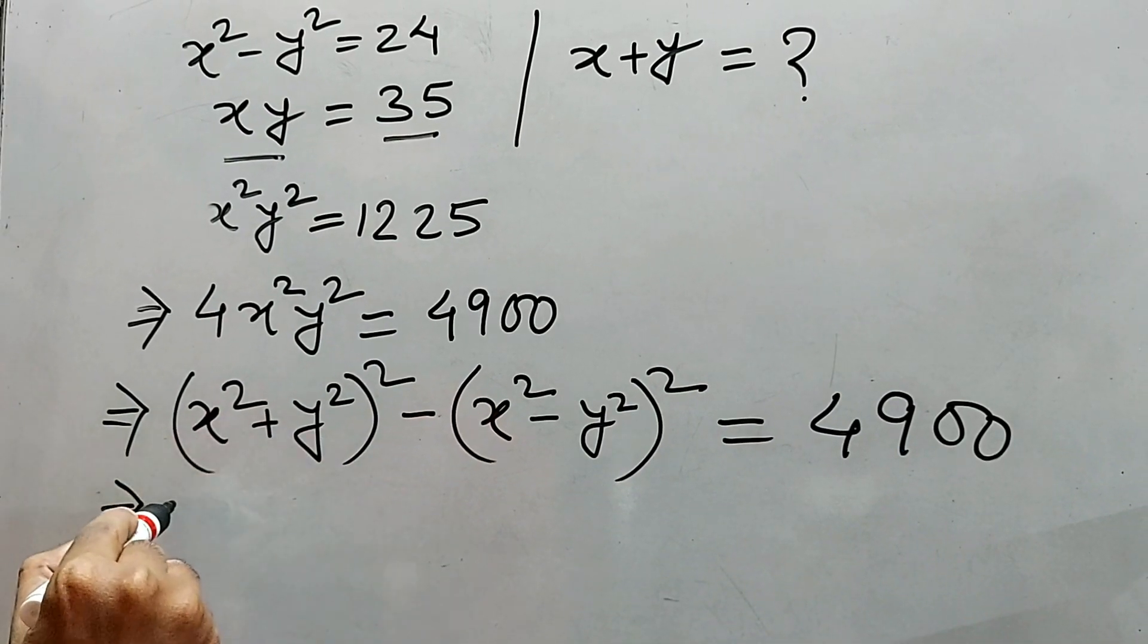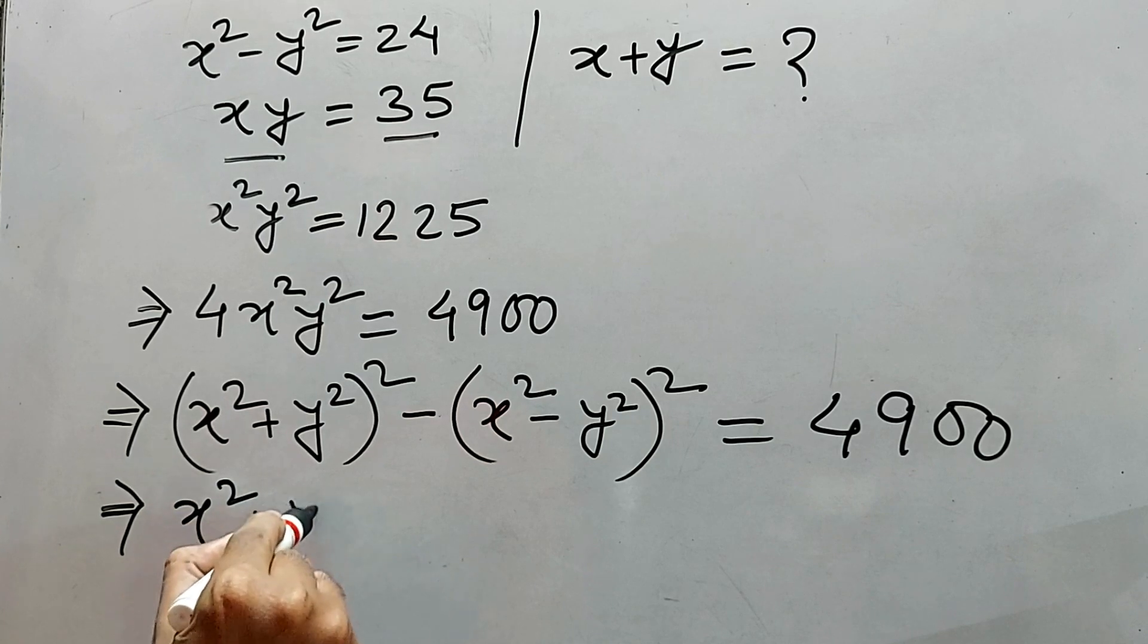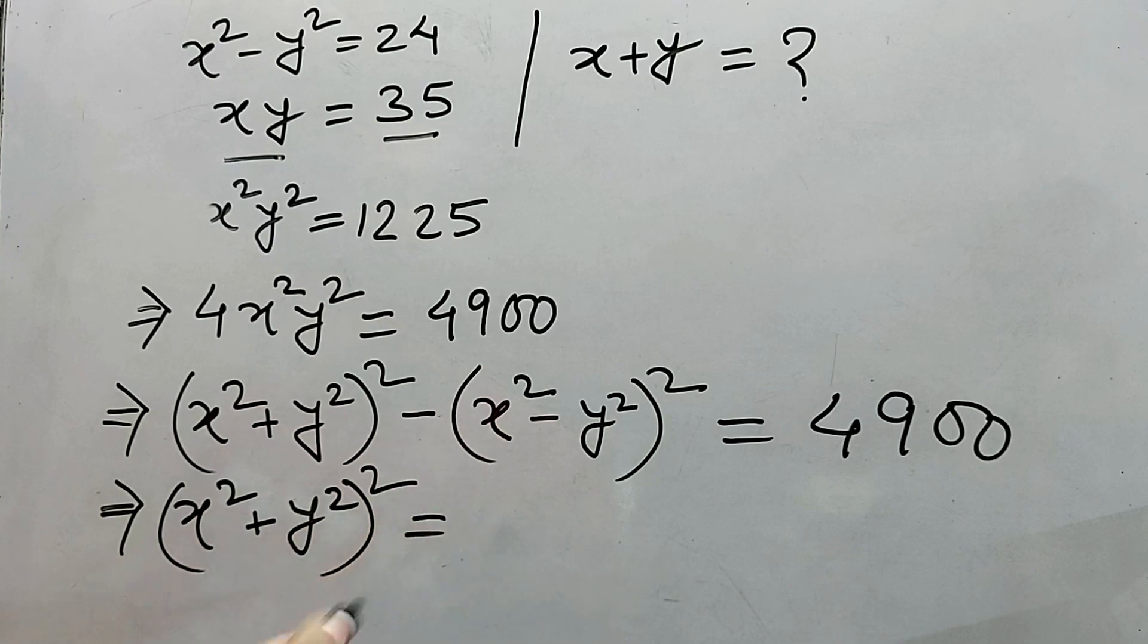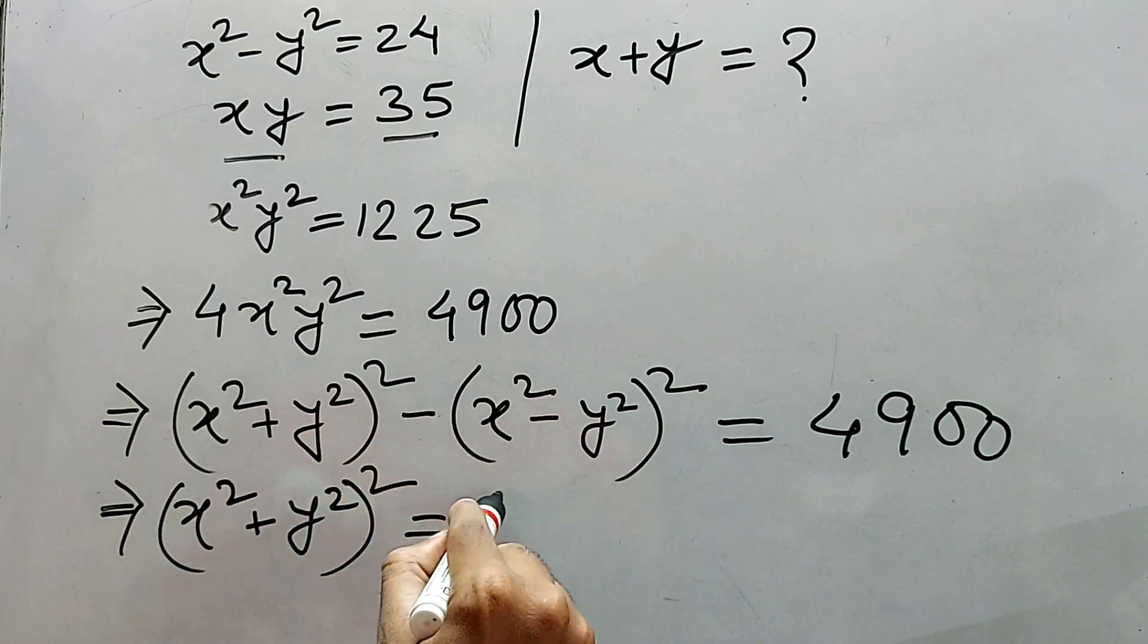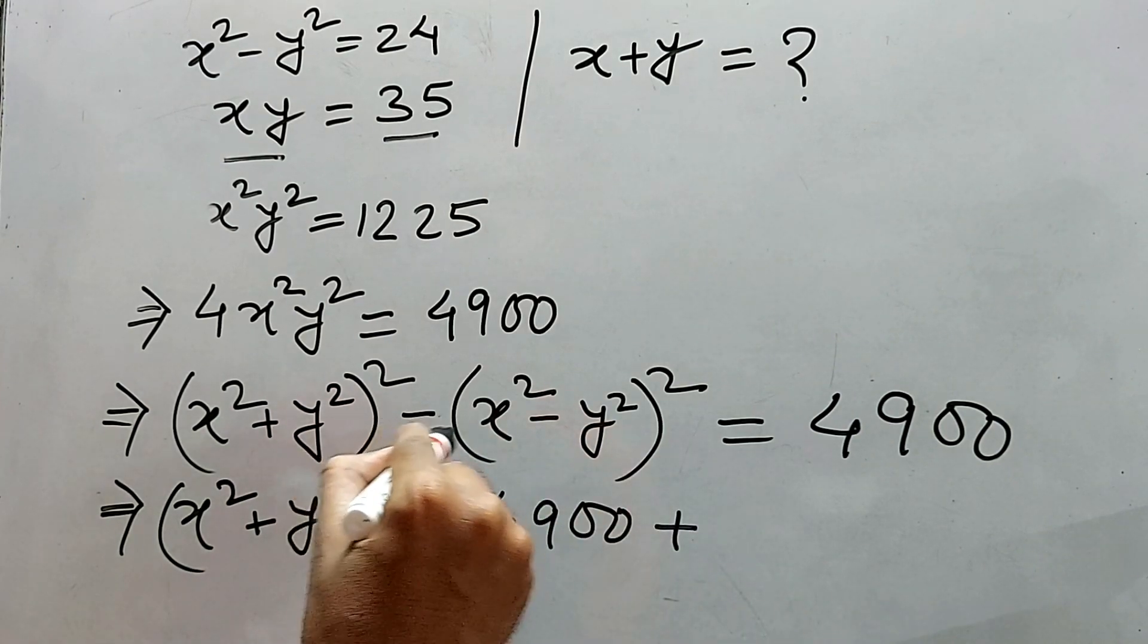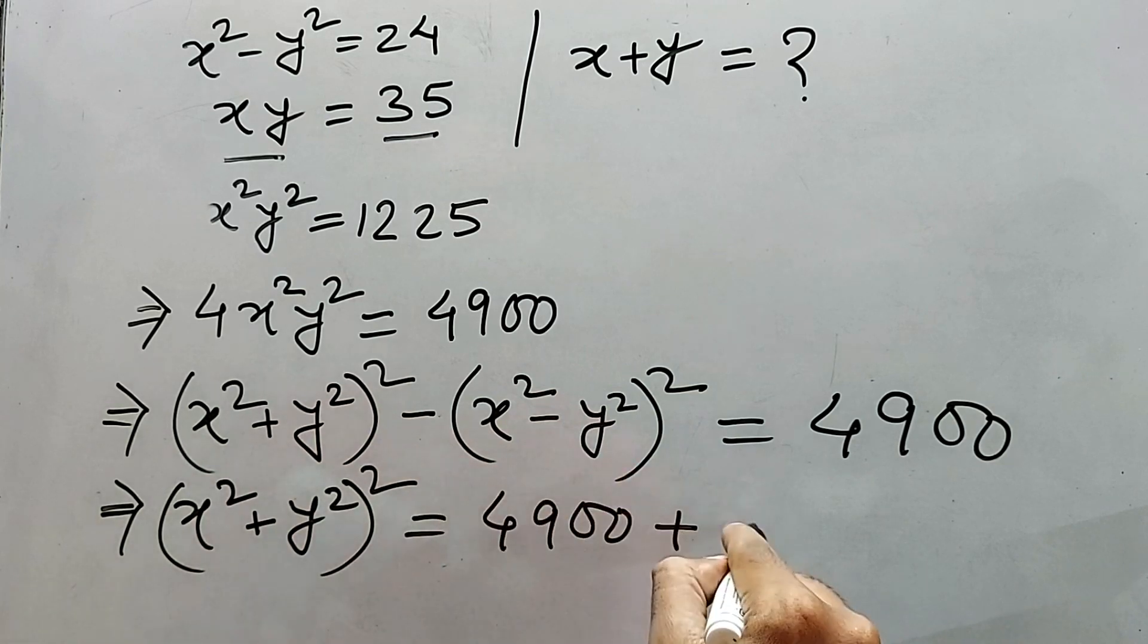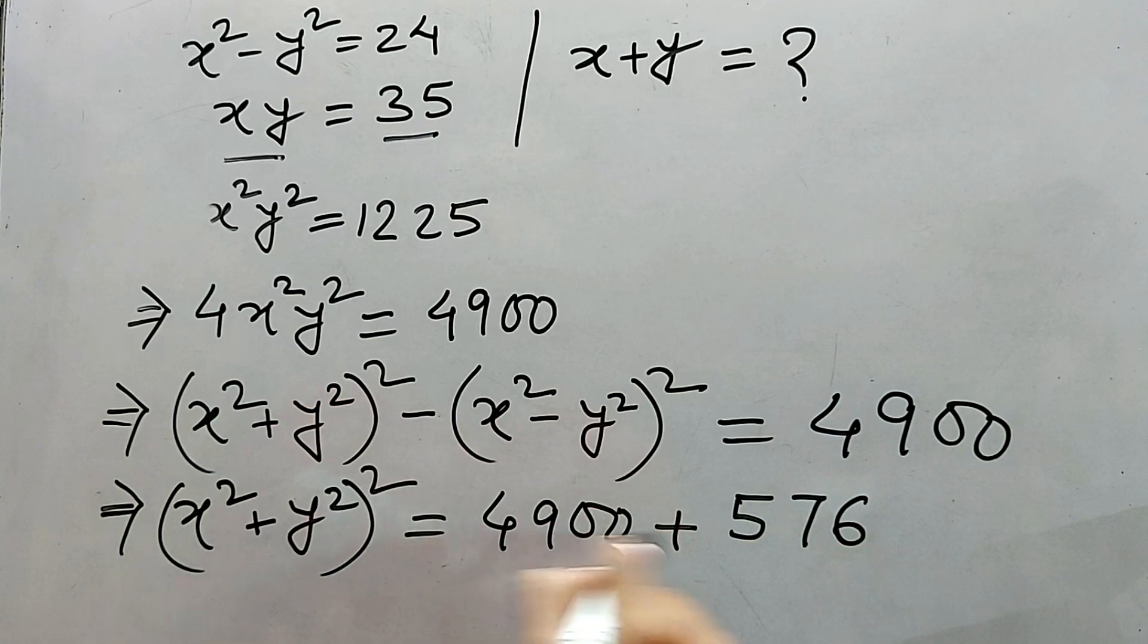Okay. So here directly we can write this part. x squared plus y squared whole square is equal to 4, 9, double zero. This term I am taking to the other side because we know the value of this. So 4, 9, double zero plus because this will go to the other side. It will be plus. Plus 576.